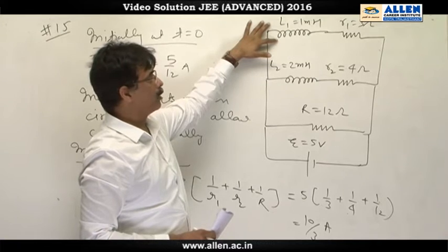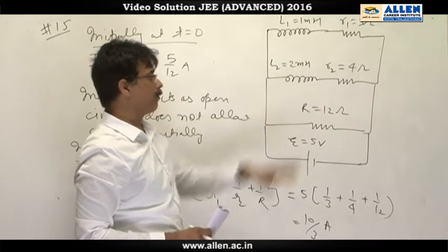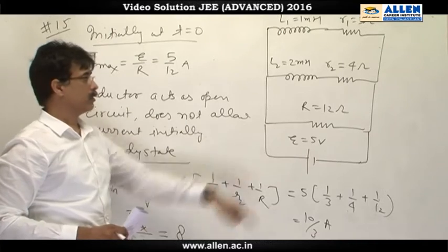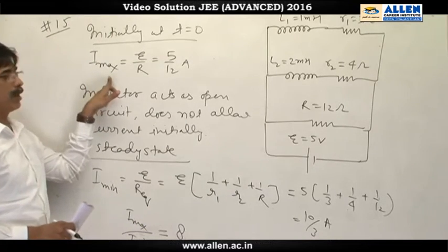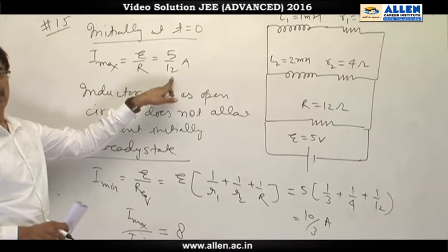So initially there will be no current in upper two branches. Current will be only through the resistor 12 ohm. So initially we get the maximum current, which is 5 by 12 ampere.